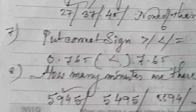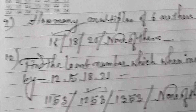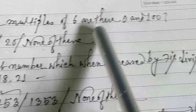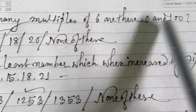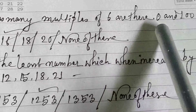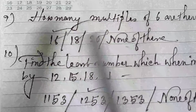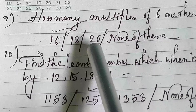Next: how many minutes are there in 356700 seconds? Options are 5945, 5495, 5594, none of these. The answer is 5945.